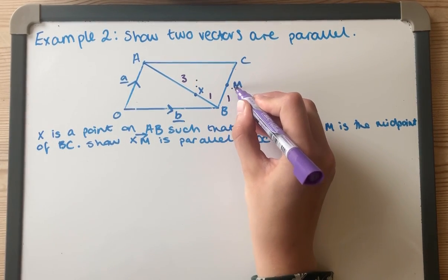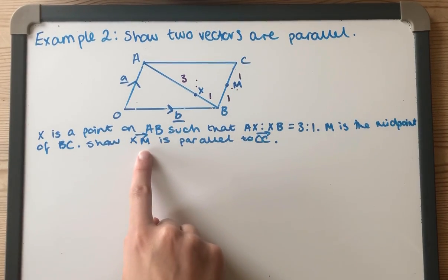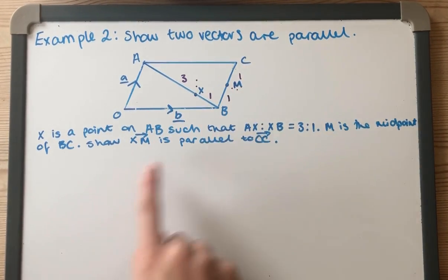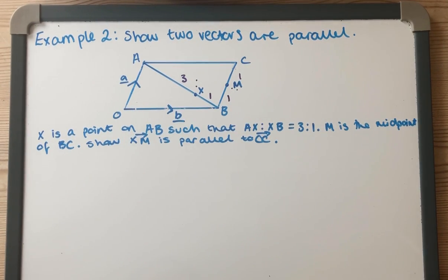M is the midpoint of BC, so I'm going to write that as a ratio of 1 to 1 because it's halfway along. We've got to show that XM is parallel to OC, which is this here.